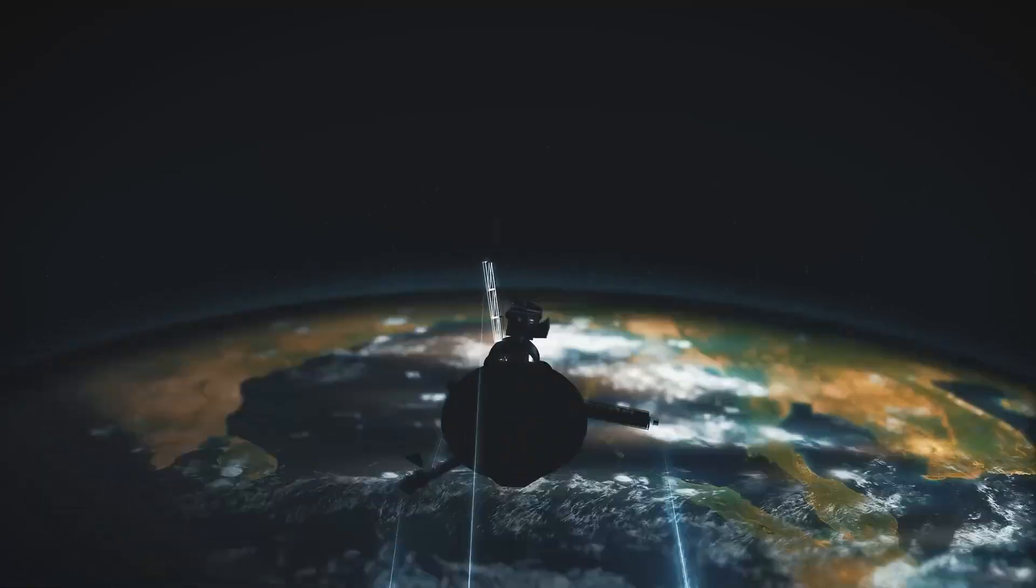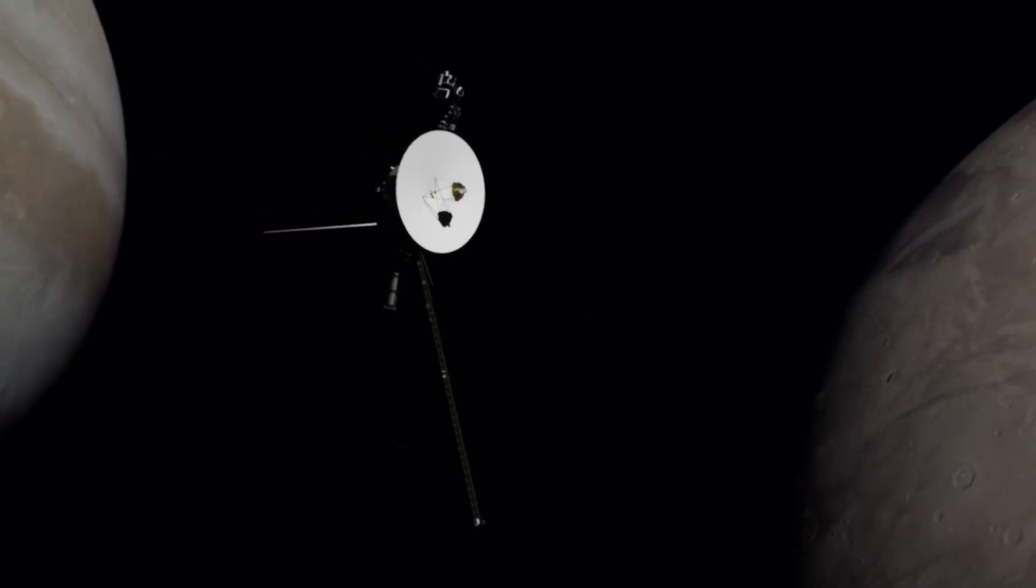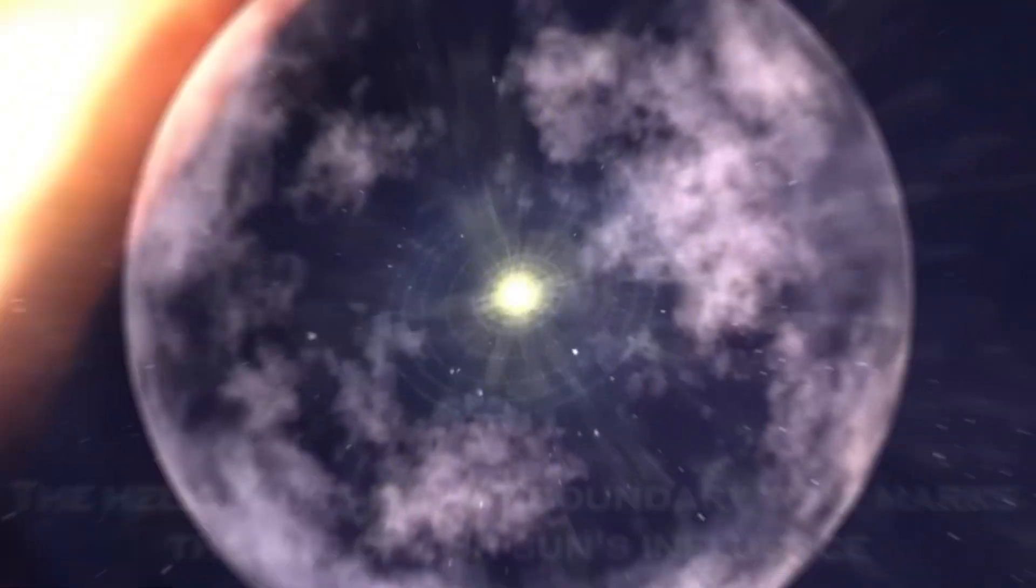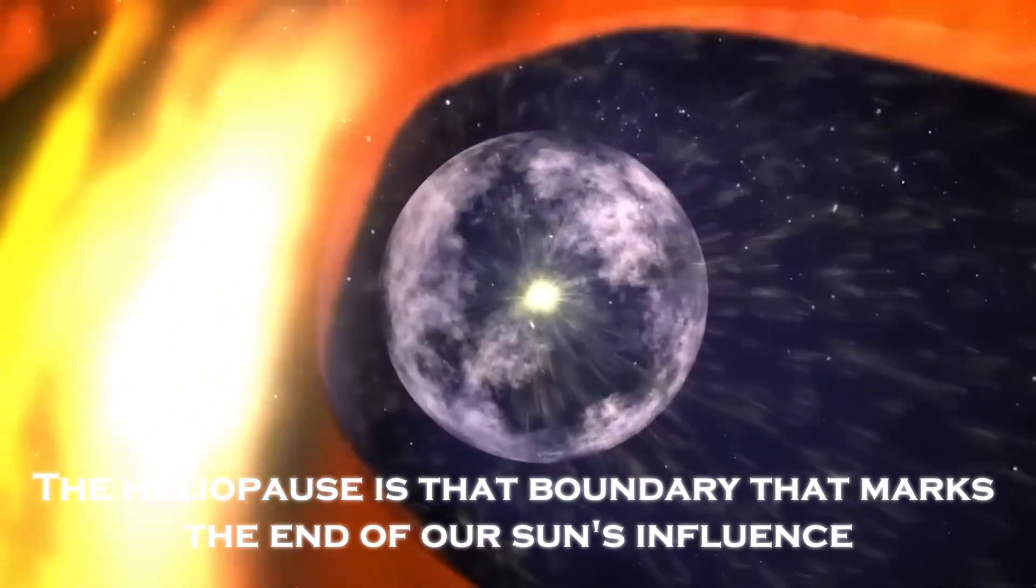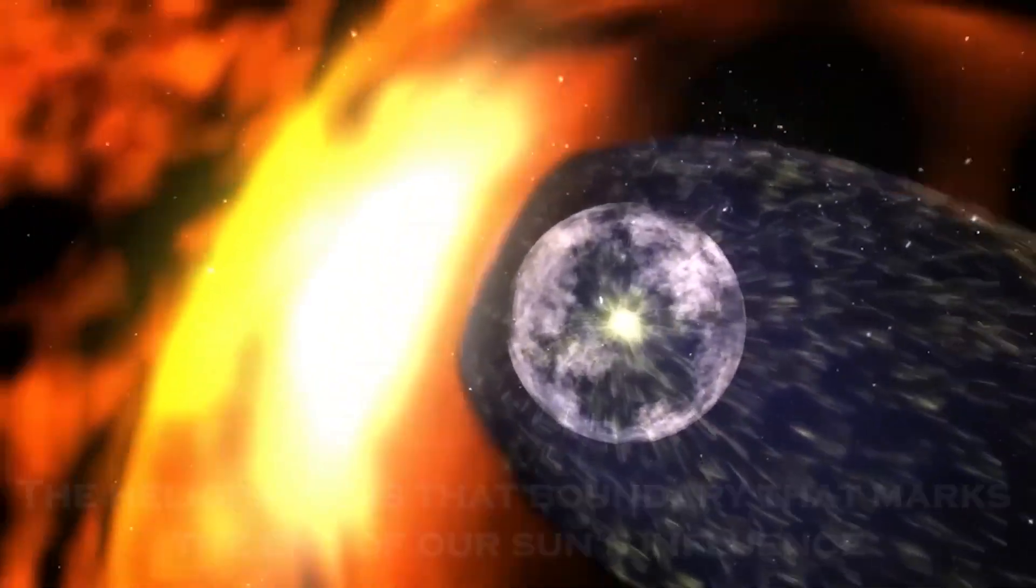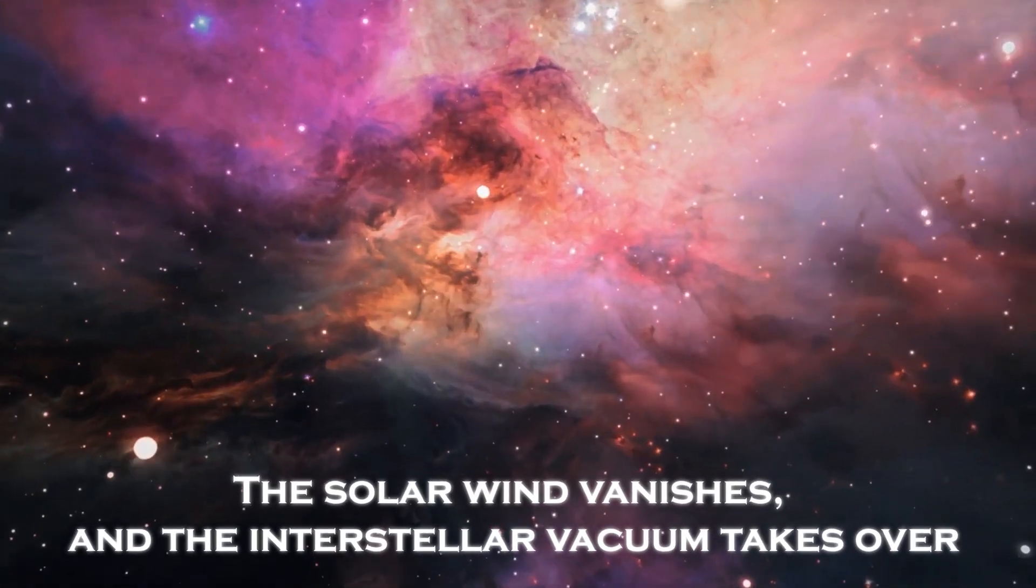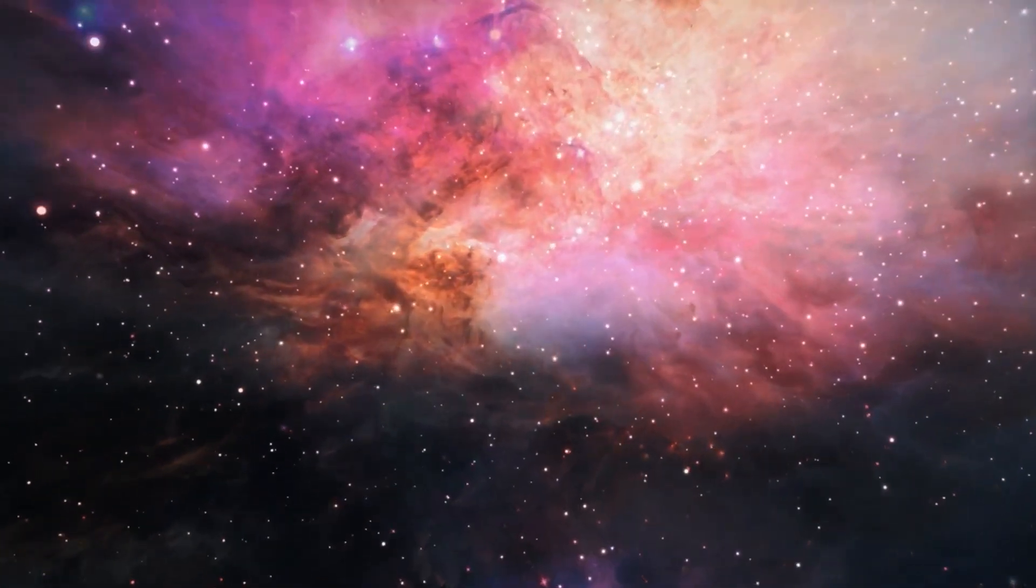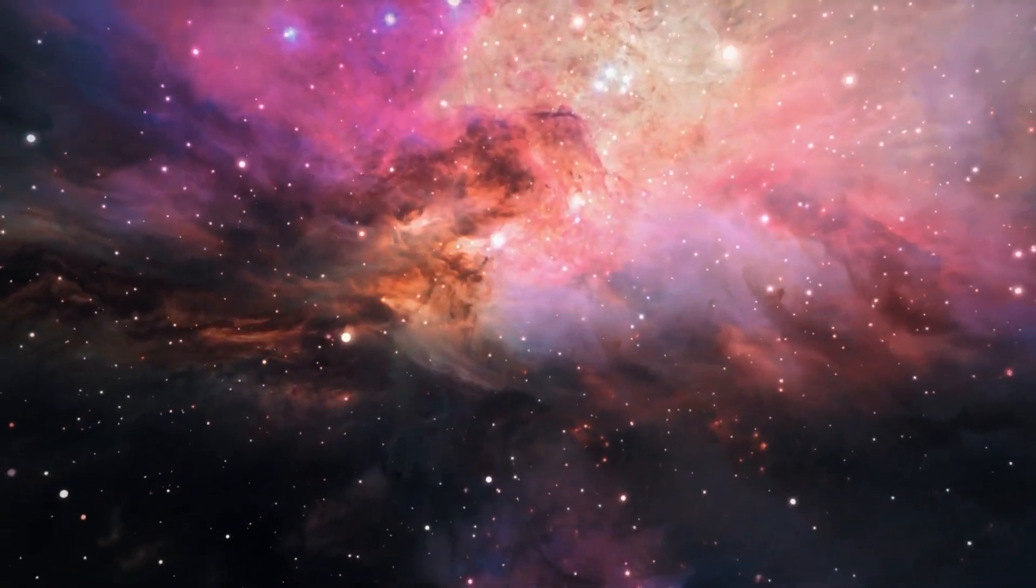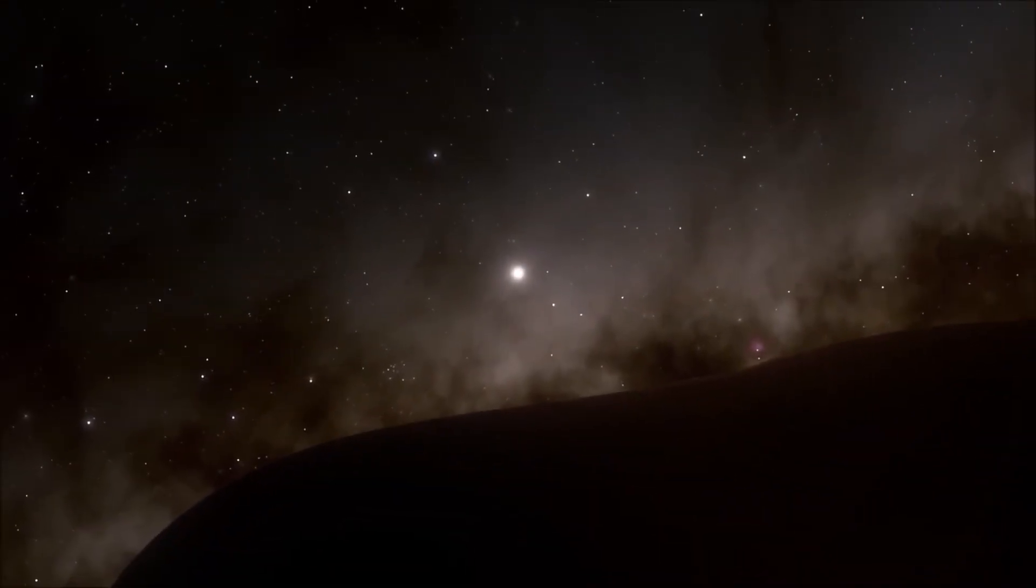It has detected something at the edge of our solar system, something scientists never imagined. The Heliopause is that boundary that marks the end of our sun's influence. Beyond this barrier, the solar wind vanishes and the interstellar vacuum takes over. But what does it really mean to cross this boundary? What lurks on the other side?